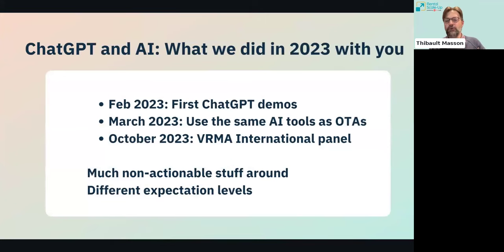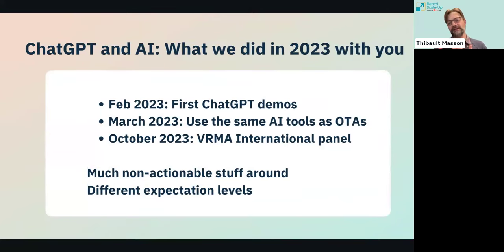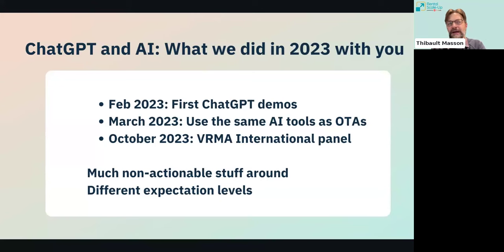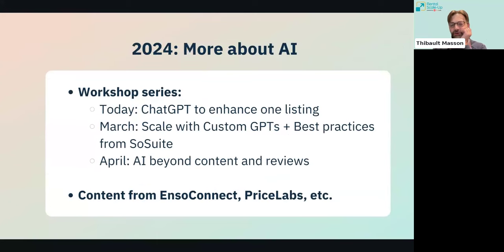Last year I went straight into demos and I think we got lost, so I learned from that. We also presented at VRM Intel's conference, explaining how tools now let you do things that previously only Airbnb or Booking.com could do — like automatically creating descriptions. But I kept noticing at conferences that people said AI was too complicated or they couldn't do anything with it.